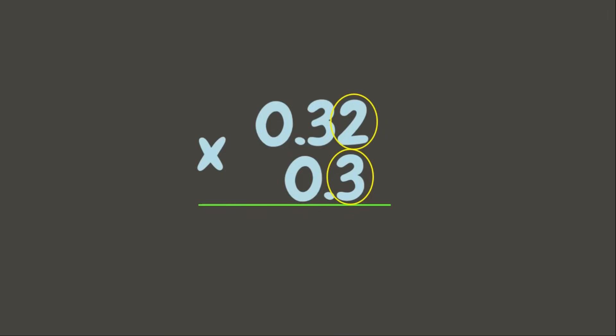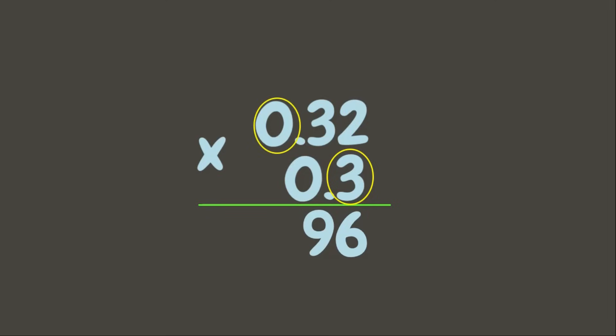Let's multiply: 3 times 2 is 6, 3 times 3 is 9, 3 times 0 is 0. Since the next digit to 3 is 0, we don't have to multiply it. Now, is this our final answer? Not yet — we need to put the decimal point in the right place.